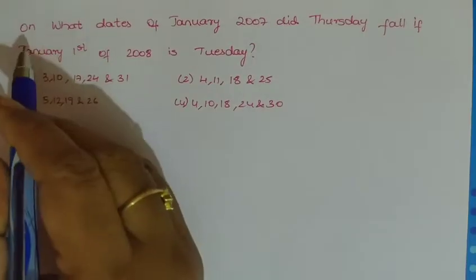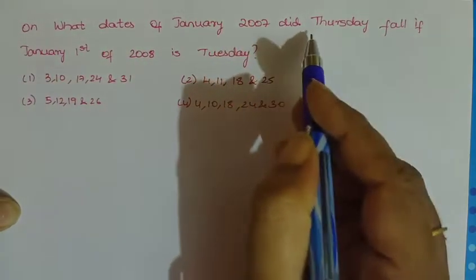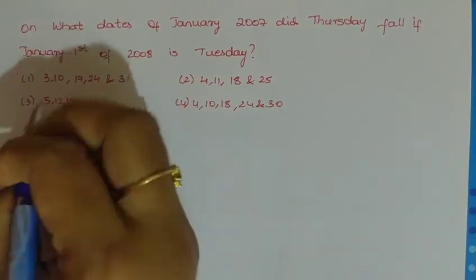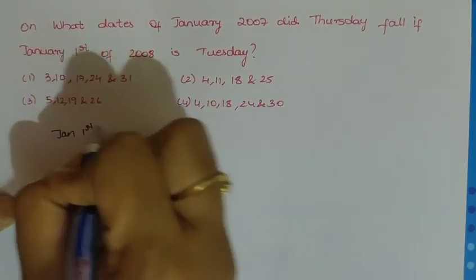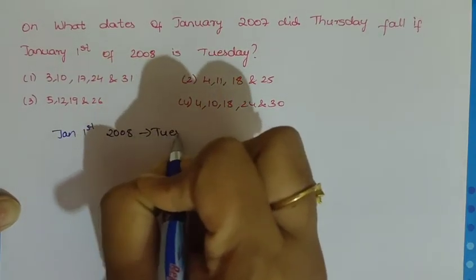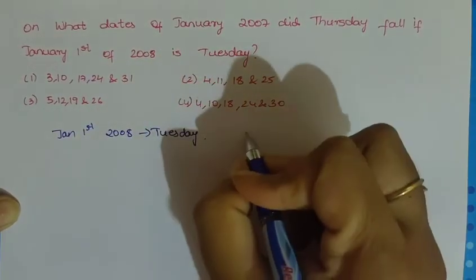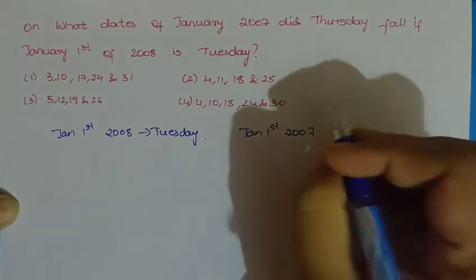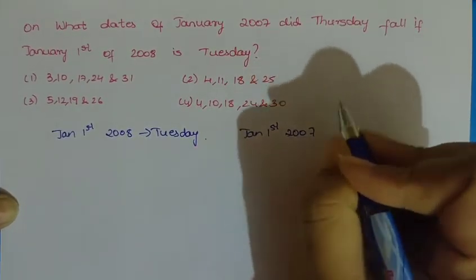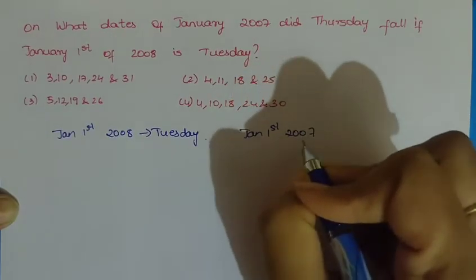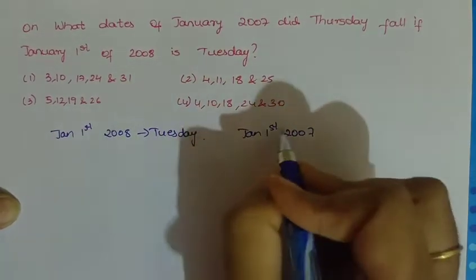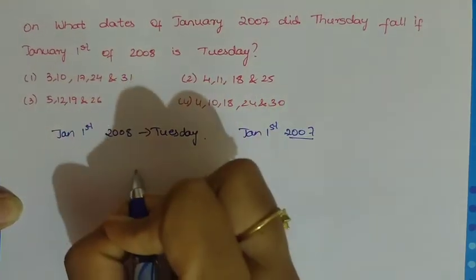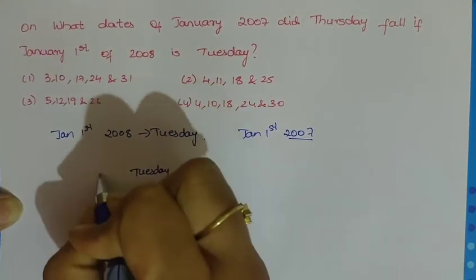105 is the answer. Next problem: on what dates of January 2007 did Thursday fall, if January 1st of 2018 is Tuesday? Starting with January 1st of 2018 being Tuesday, we note that 2007 is a non-leap year with 1 odd day. So going back, January 1st 2008 would be Tuesday.